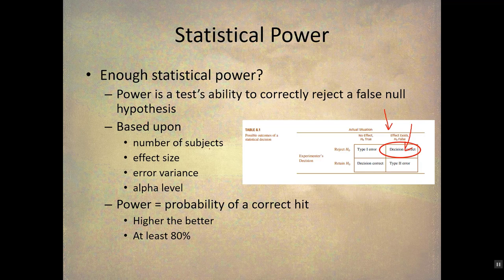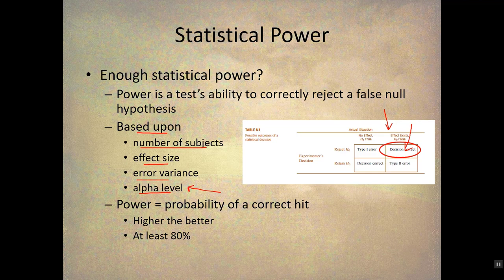You should have statistical power based on your effect size, your error variance, and everything else that is appropriate for what you're working with. Statistical power is based on the number of subjects, the effect size, the level of error variance, and the alpha level. As a researcher, you have a lot under your control. Alpha level is under your control. The number of subjects is under your control.